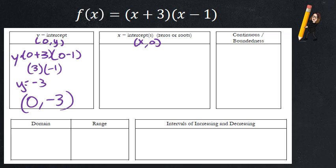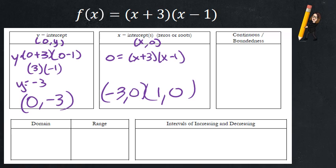If I want to set y equal to zero, oh wait a second, we already did that. We already know our intercepts. So let's just write them out. We don't need to show the work again. It's still negative three, zero, and one, zero. Continuous boundedness. Yes, continuous. Boundedness, it's bounded below because it was an upwards parabola.